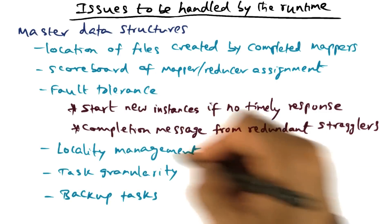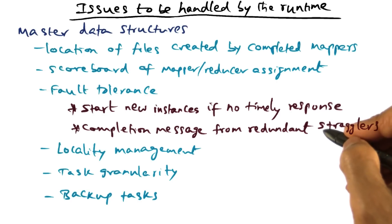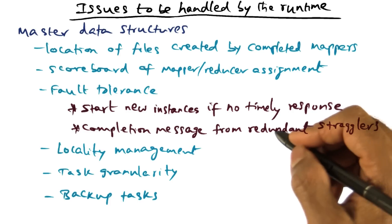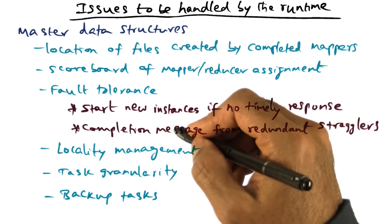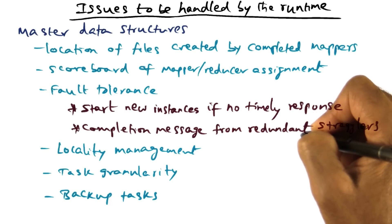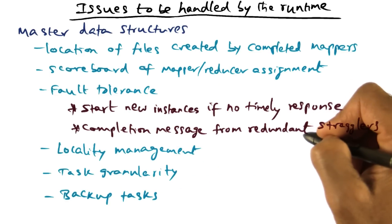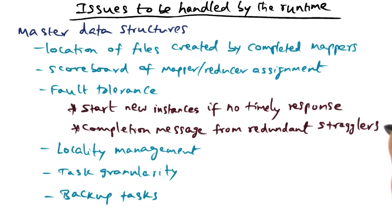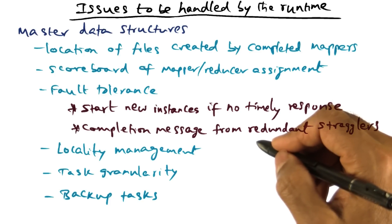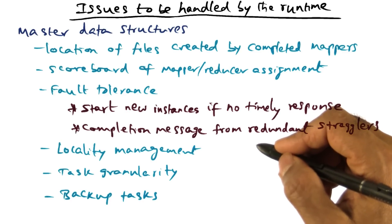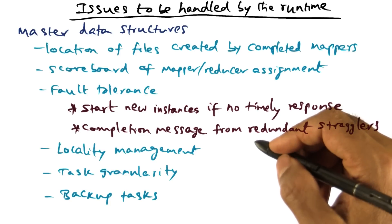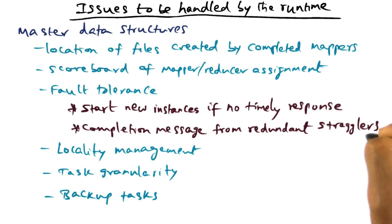There is an inherent assumption in the fault tolerance model of the MapReduce framework, and that is idempotency of the mapper. That is, even though the same input data split is being worked on by multiple mappers, it doesn't affect the semantics of the computation as a whole. And that is the reason why the master can simply ignore the redundant stragglers message if in fact it was a slow computational engine that was working on a particular map function. And if it finishes later than when it was supposed to, and the master has already started another redundant computation to take care of that particular split, ignoring that redundant straggler message is okay because of the idempotency assumption about the mapping operation.